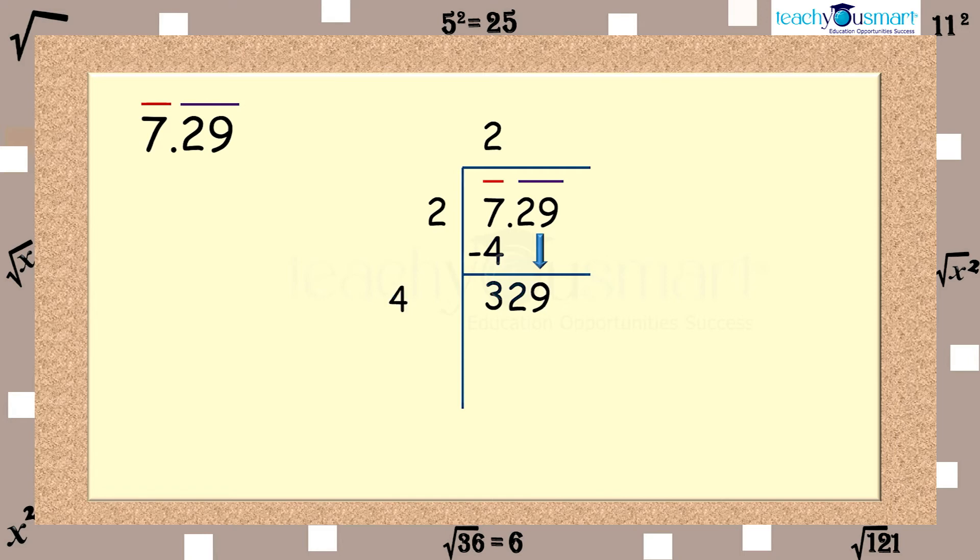Double of 2, that is 4, enter with a blank on its right. Put a decimal point in the quotient.